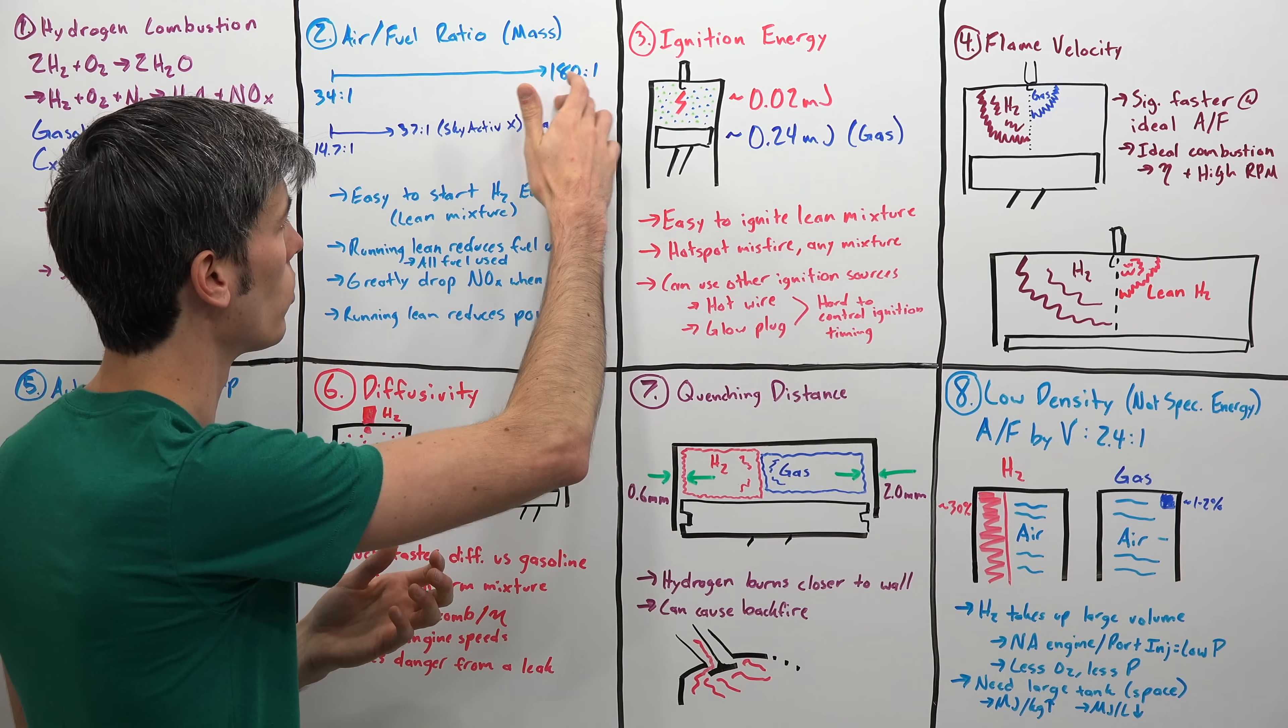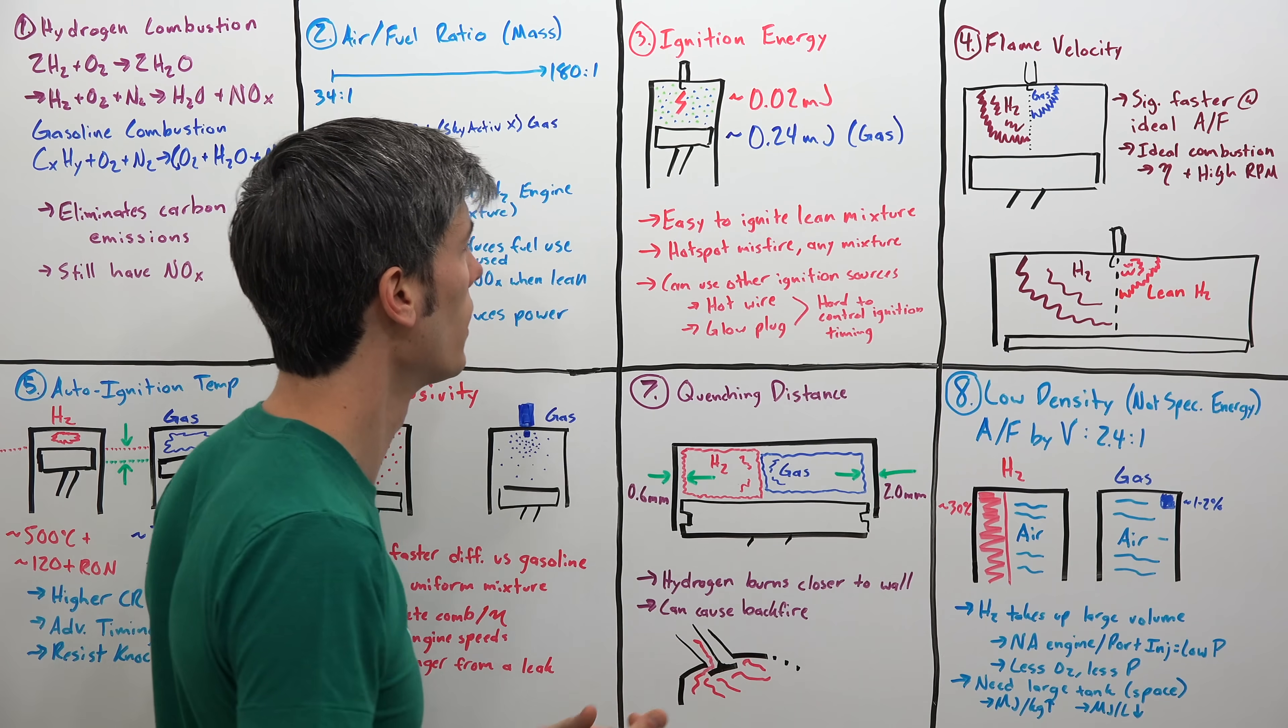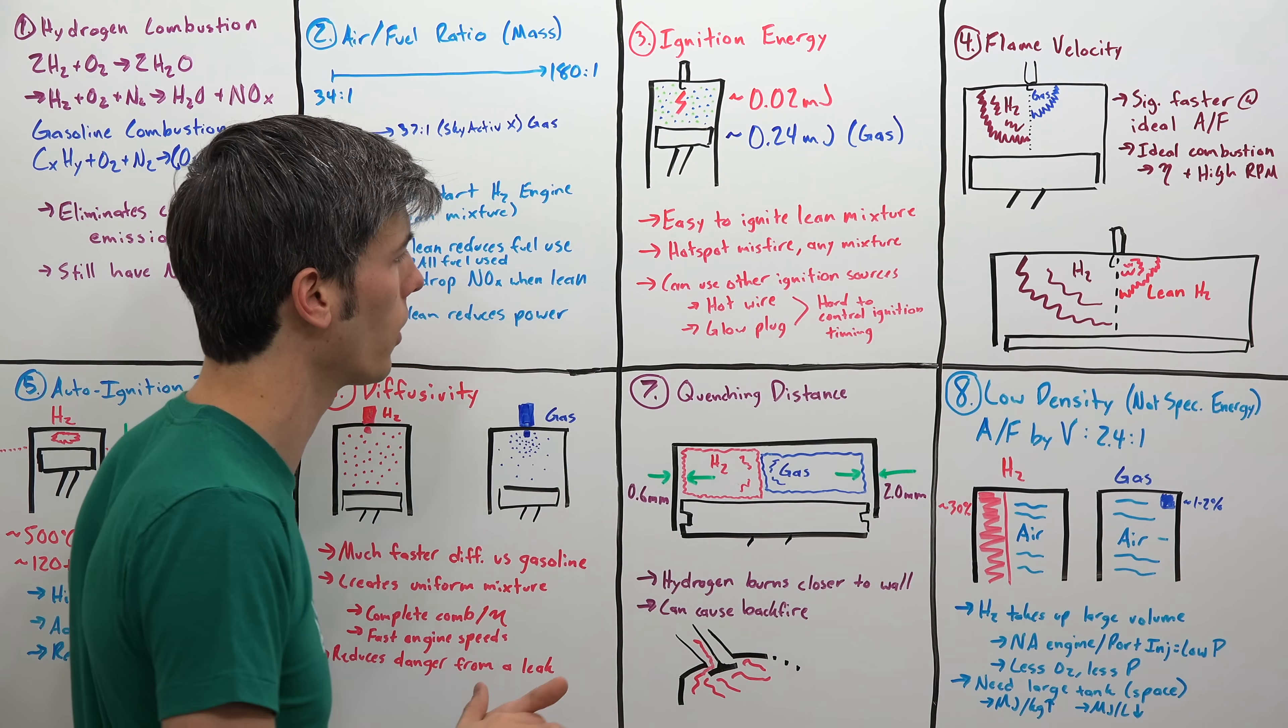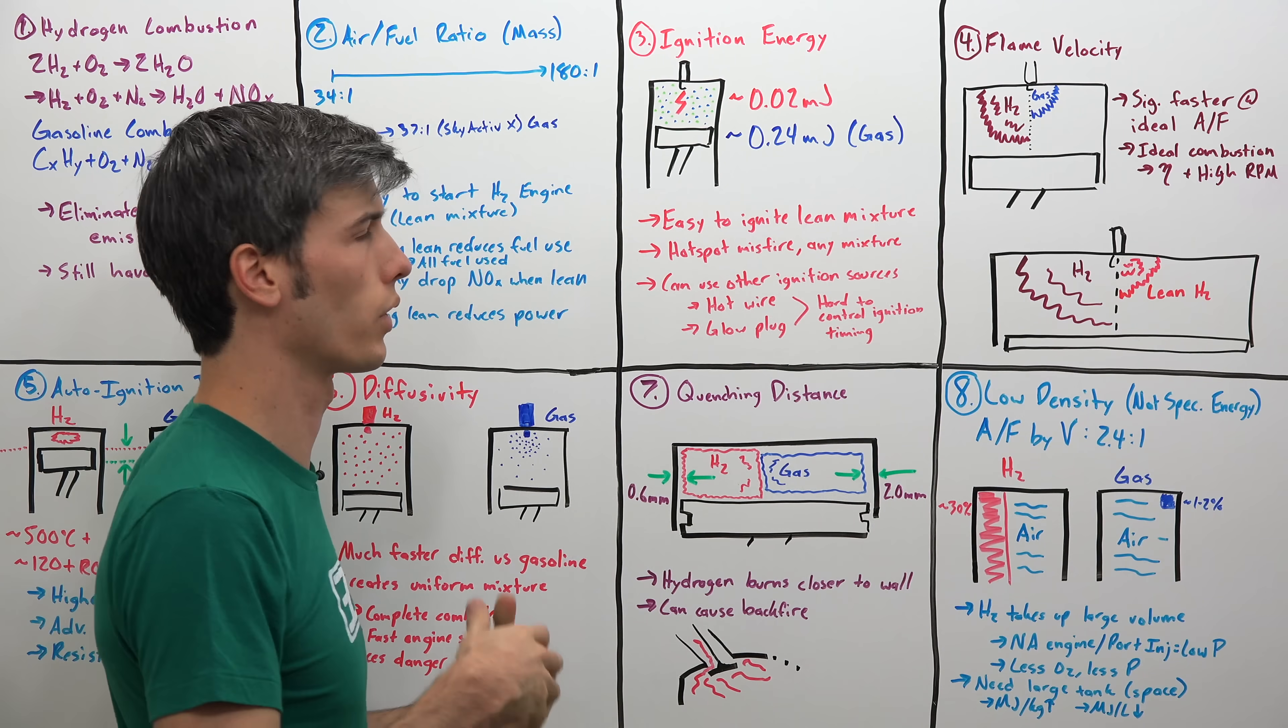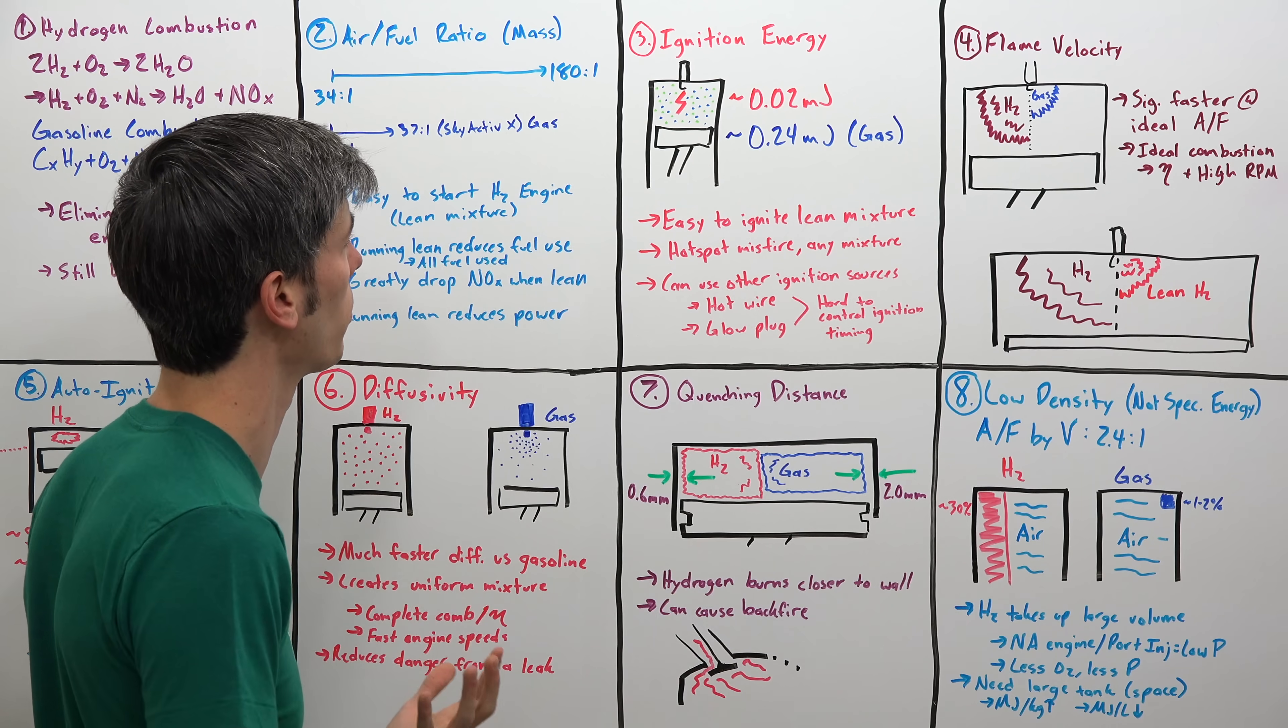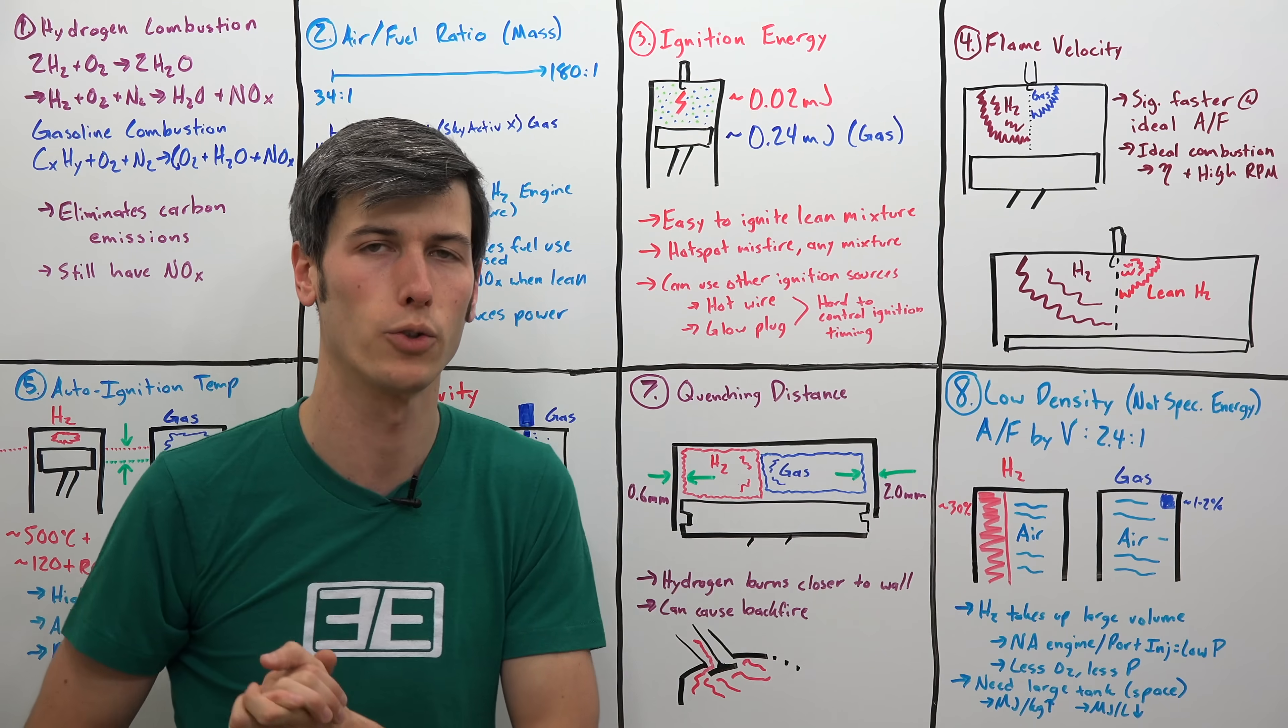And because it can run at such low air fuel ratios, pretty much any random air fuel ratio in there, if it's next to something hot, it's going to be pretty easy for it to ignite. The advantage is you can use different types of ignition sources if you wanted, like a hot wire or a glow plug, kind of like a diesel engine may use to get ignition started. That's difficult for controlling timing. So you would use something like a spark so that you could control the timing. But if you perhaps did have a compression ignition hydrogen engine, then perhaps you could use a hot wire or a glow plug to get things started initially, and then just run it off compression after that. More common to use a spark in order to have combustion with a hydrogen engine.